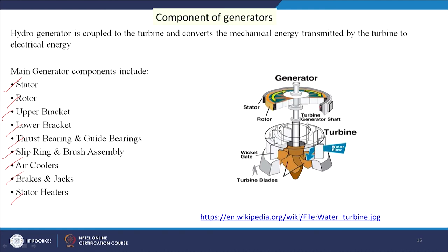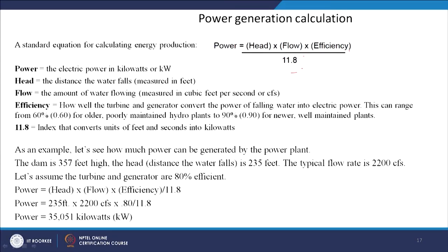Power generation in the FPS system is calculated as: Power (kW) = Head (feet) × Flow (CFS) × Efficiency / 11.8. Efficiency reflects how well the turbine and generator convert falling water into electric power, ranging from 60% for older poorly maintained plants to 90% for newer well-maintained ones. The factor 11.8 converts units of feet and seconds into kilowatts.